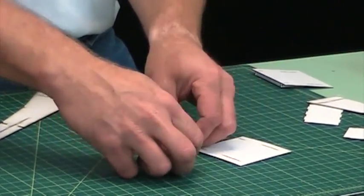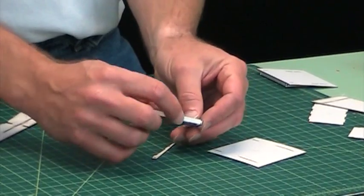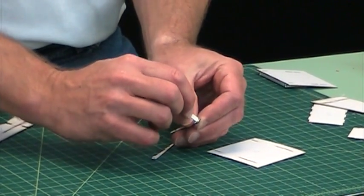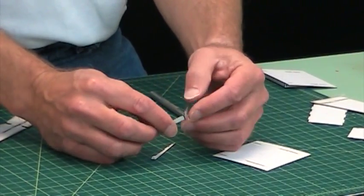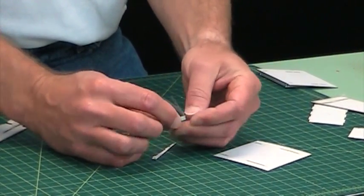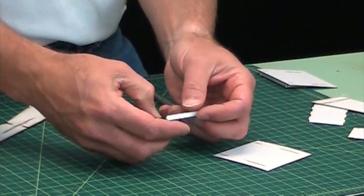And basically you're going to take the long piece and stick it in that little corner right there. And it should be a nice snug fit.